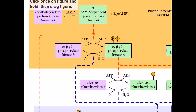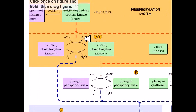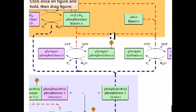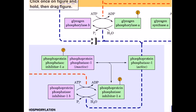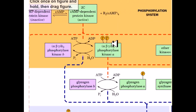In this video we are looking at the major phosphorylation systems and dephosphorylation systems that regulate glycogen metabolism in muscle cells. As you can see, this is a large picture with a lot of different enzymes and ATPs involved in this process — it's a pretty complex process.